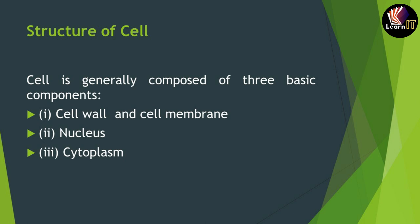Now we'll continue with the structure of the cell. The cell is generally composed of three basic components. The first is the outermost layer, which is the cell wall and cell membrane. The second is the nucleus, the dark center part containing chromosomes. The third is the cytoplasm, the liquid of the cell which contains all the organelles. In the upcoming video we'll discuss cell organelles.